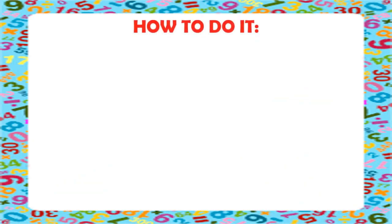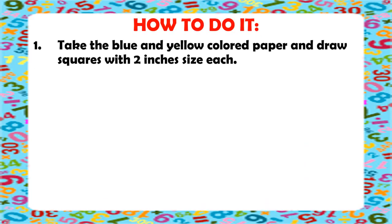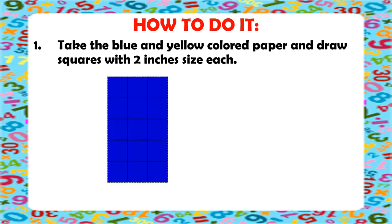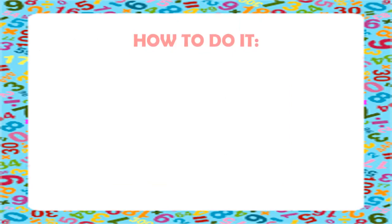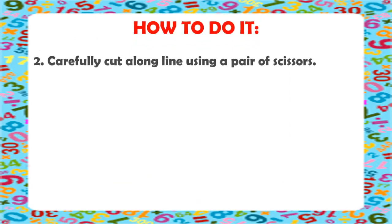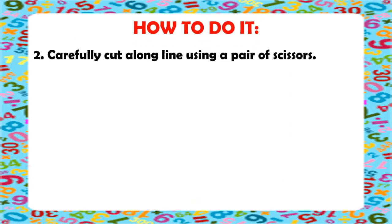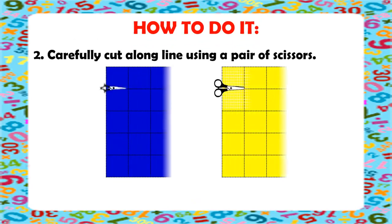These are the steps on how to make an algebra tile. First, take the blue and yellow colored paper and draw squares with 2 inches size each. Next, carefully cut along the line using a pair of scissors.